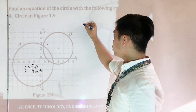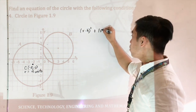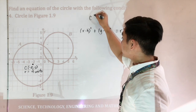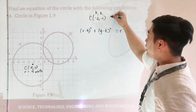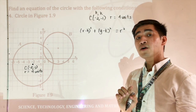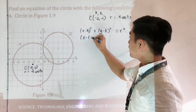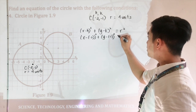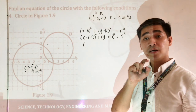Since the center is not anymore located at the origin, the standard equation is X minus H quantity squared plus Y minus K quantity squared is equal to R squared. We now have the values of the center at negative 2 and negative 1, and the radius is 4 units. Let's substitute: X minus negative 2 quantity squared plus Y minus negative 1 quantity squared is equal to 4 squared. Negative minus negative becomes positive.